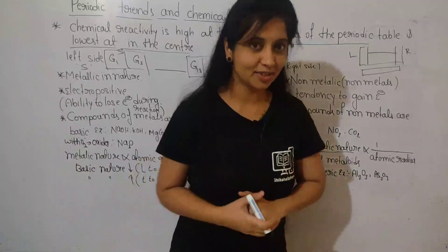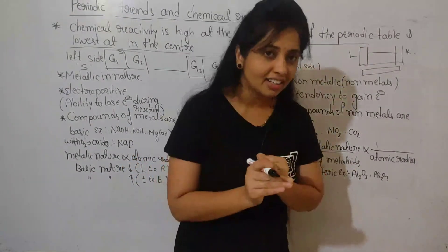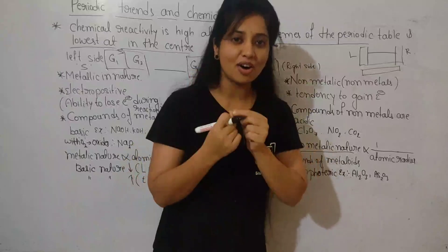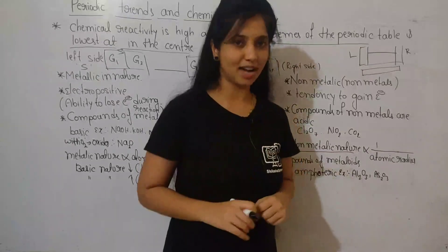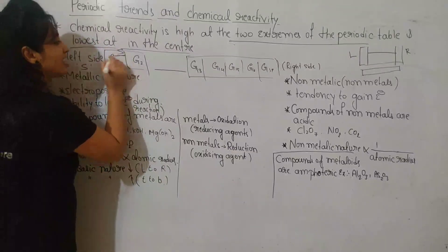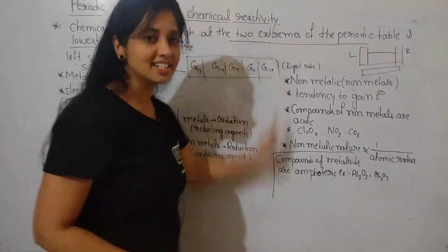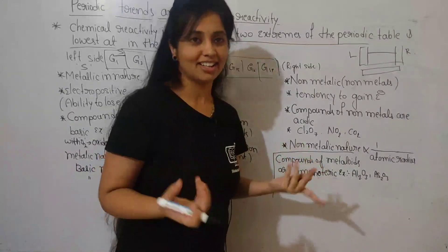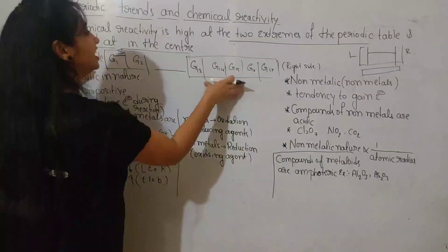When reactions take place between two elements, it is because loss of electrons, gaining of electrons, or sharing of electrons occurs. S-block elements have a high tendency to lose electrons, and p-block elements on the right side have a high tendency to gain electrons. That is why reactions take place easily and these elements are highly reactive in nature.